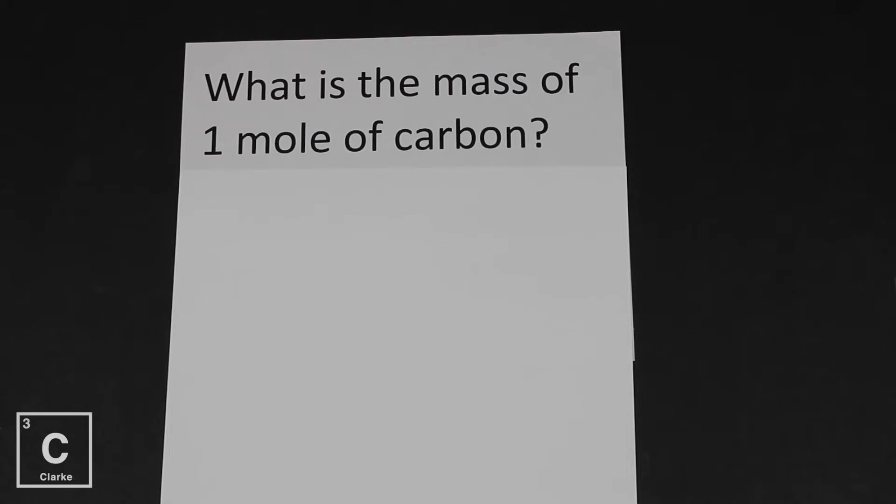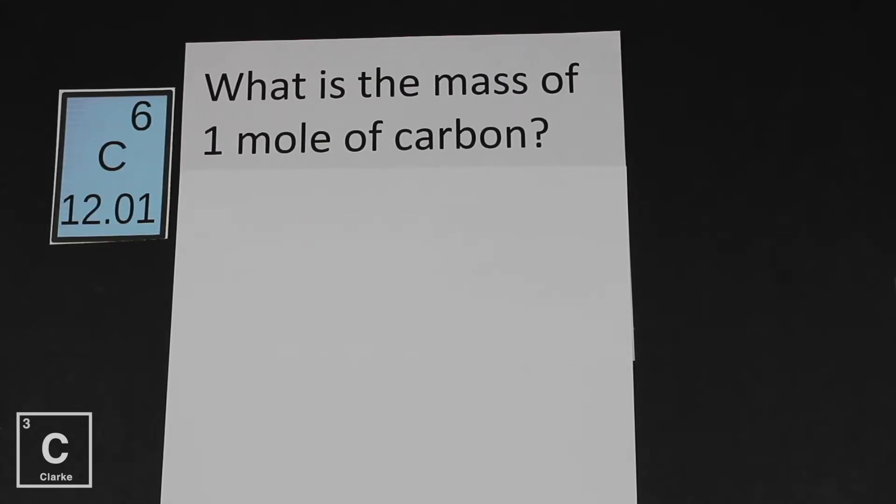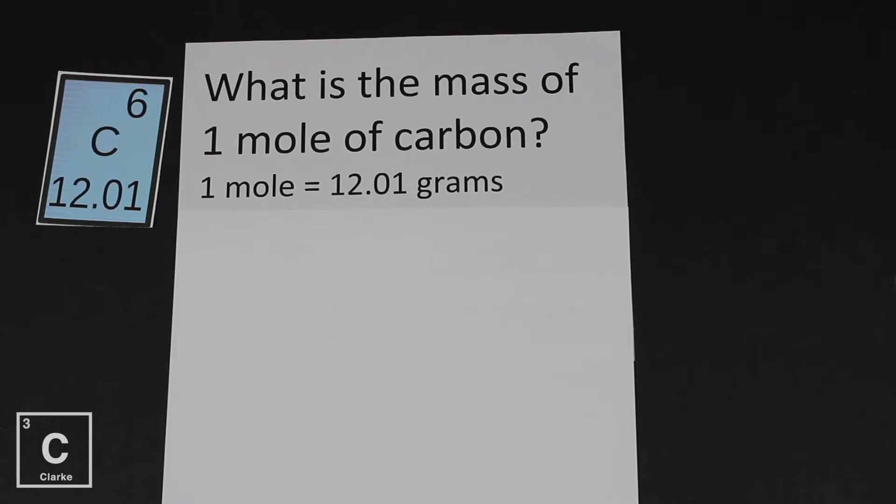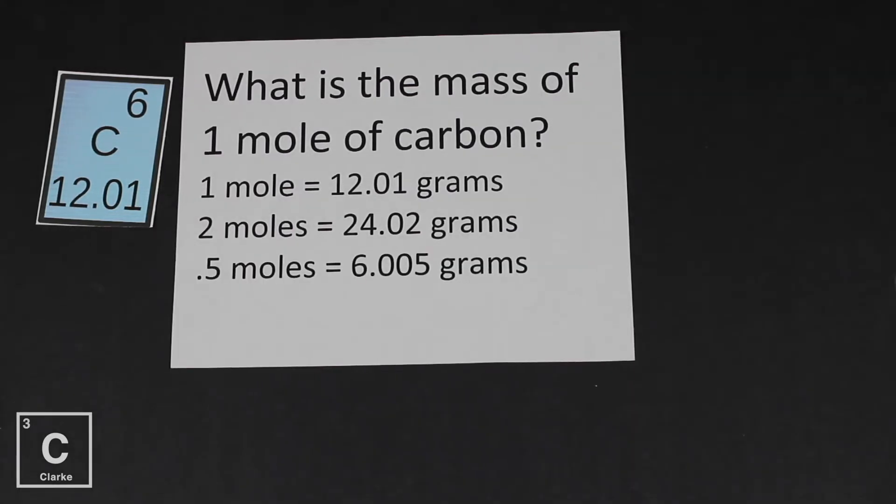Let's start at the very basics. What is the mass of one mole of carbon? If we look at the periodic table, we see the mass of carbon is 12.01. So the mass of one mole of carbon is just 12.01. But what if we wanted to know about two moles? You just multiply 12.01 times two. That would get us 24.02. Or what if we wanted to know about half of a mole? For half of a mole, we just take that 12.01, cut it in half. 6.005 grams.